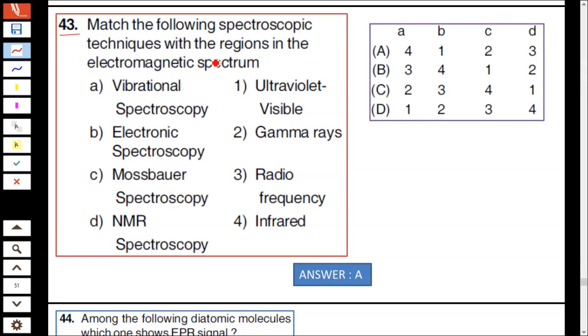Question number 43: Match the following spectroscopic techniques with the regions in the electromagnetic spectrum. Vibrational spectroscopy is IR, electronic spectroscopy is related to ultraviolet and visible region.